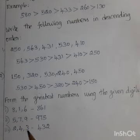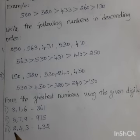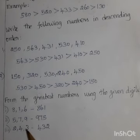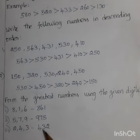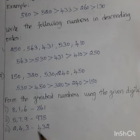Next, given digits: 2, 4, 3. Which is the greatest number? Number 4. Next 3, next 2. So first we write number 4, next 3, next 2. So 432 is the greatest number.